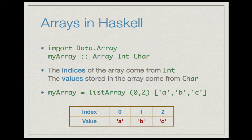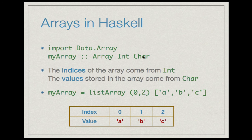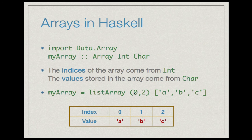Here is how you use this. Import Data.Array and then declare an array, say myArray. The type of an array is given as, for instance, myArray :: Array Int Char, where indices come from Int and values stored come from Char. If you say myArray = listArray (0,2) "abc", it produces an array with three indices 0, 1, and 2 storing 'a' at index 0, 'b' at index 1, and 'c' at index 2. This notation creates an array from the given list with indices lying between 0 and 2.